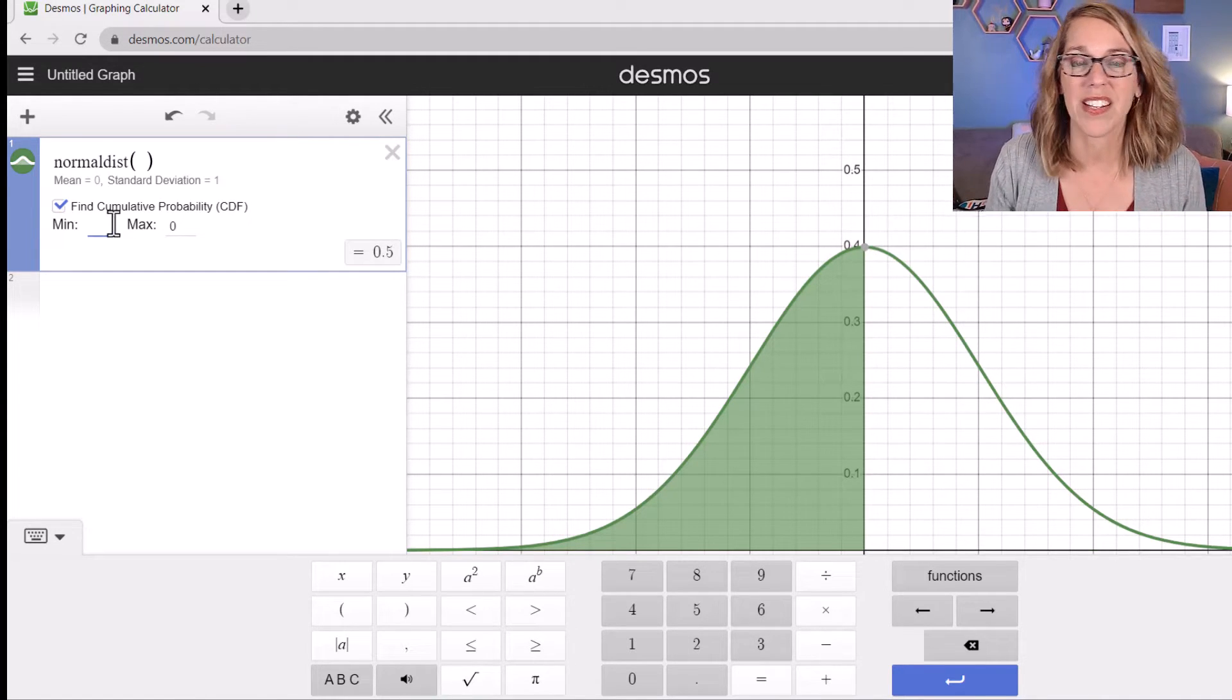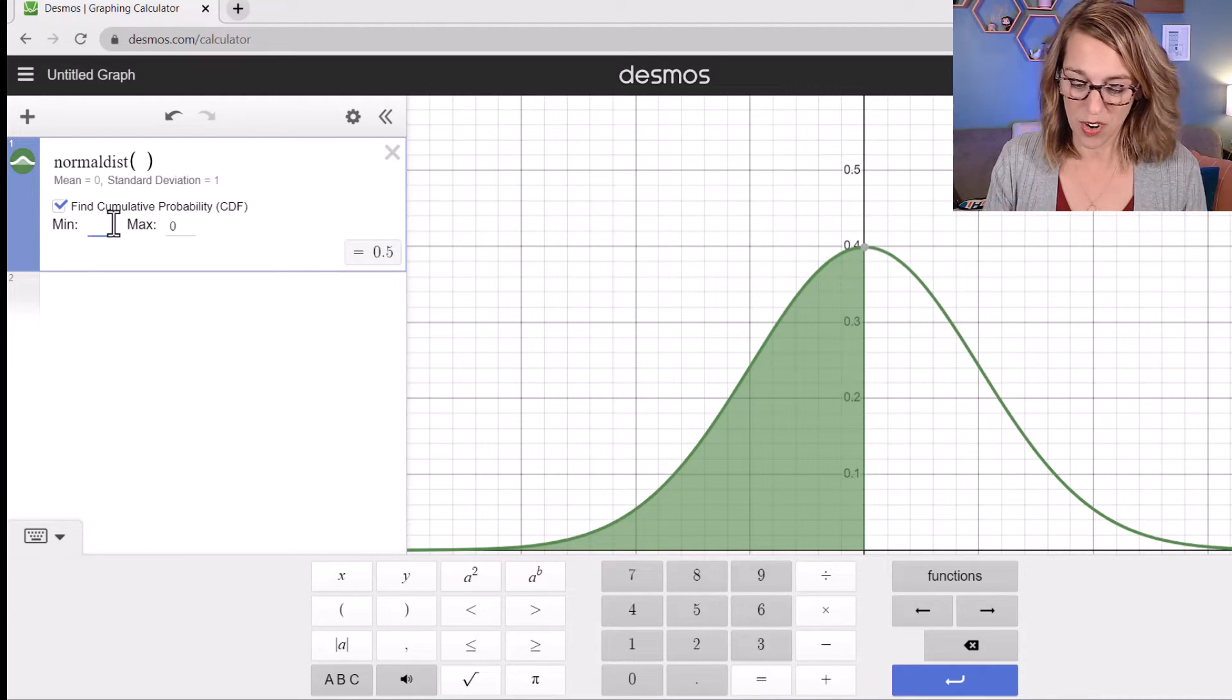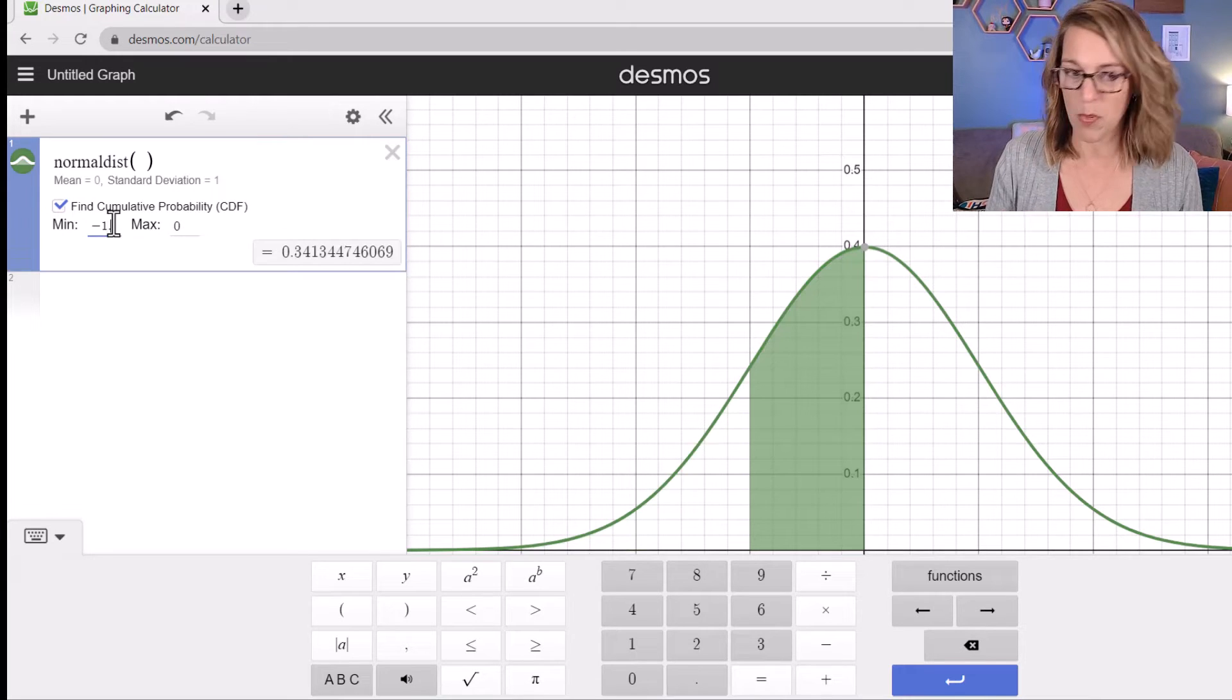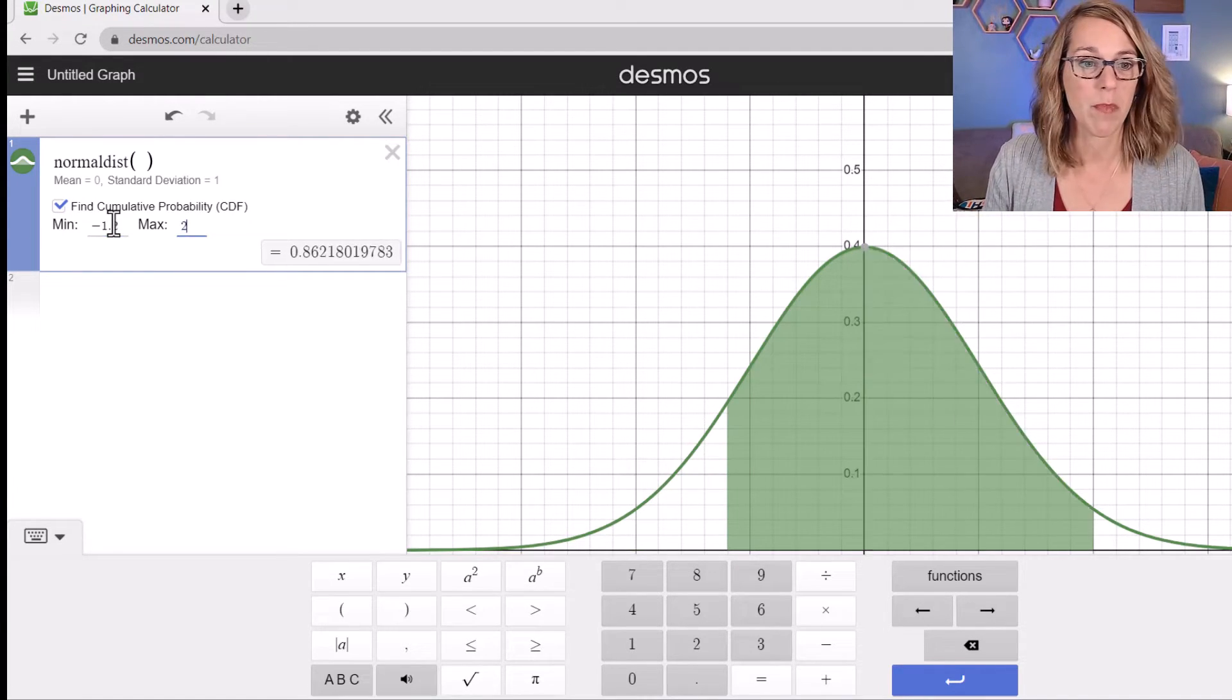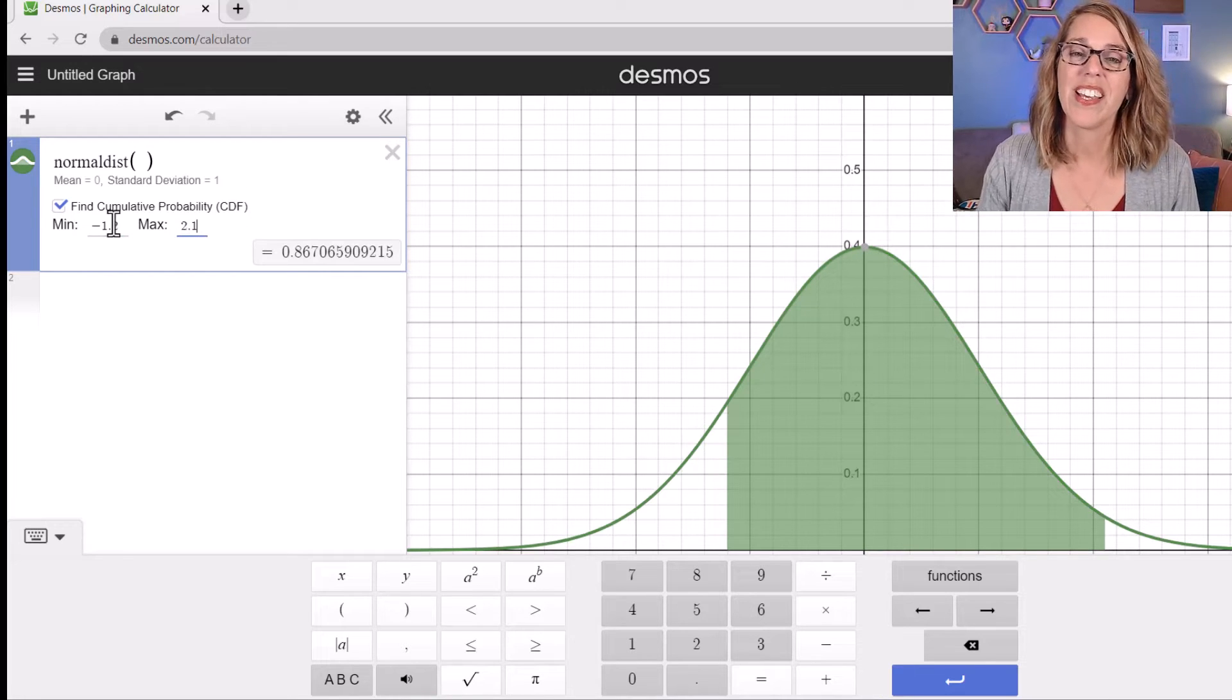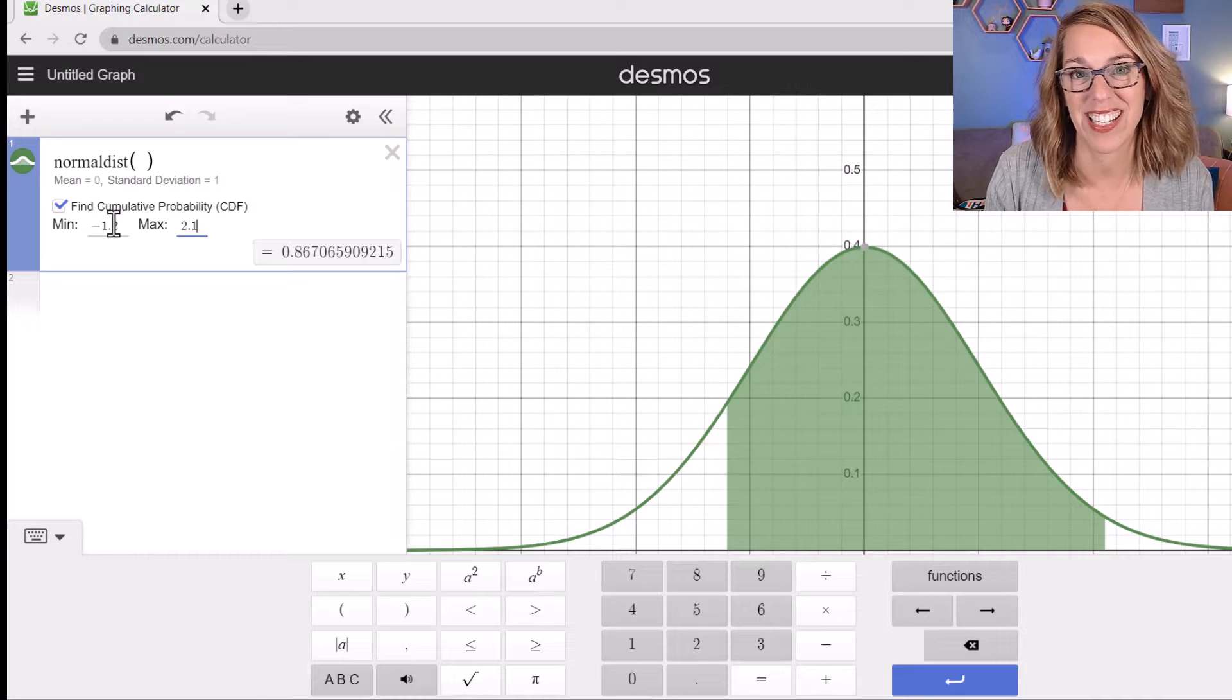If I wanted to find, let's say I wanted to find the area between two different Z scores, I can do that as well. I can go negative 1.2. I'm just going to tap over to the maximum. Maybe I want to go to 2.1. It shades and gives me that area of 0.867.